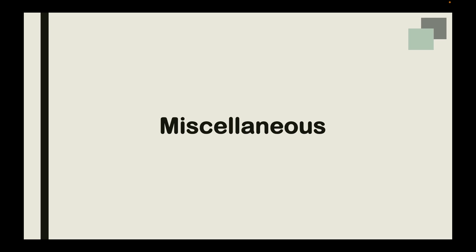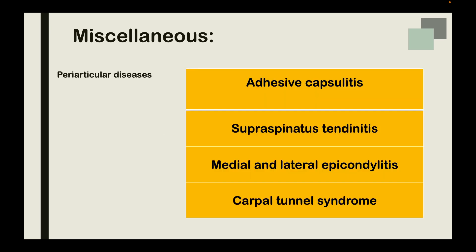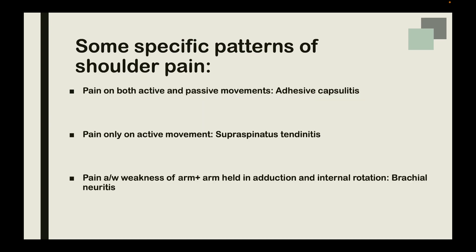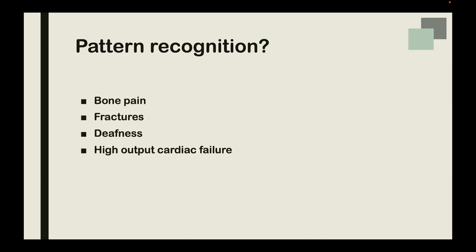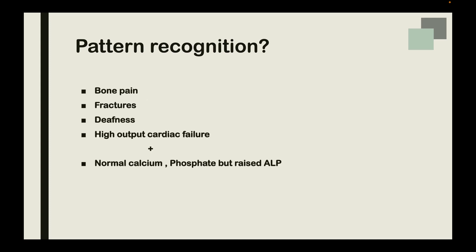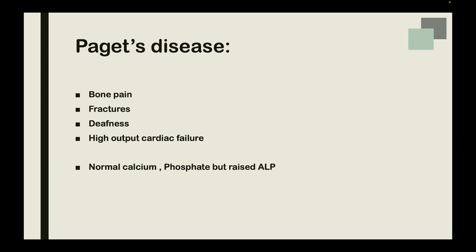Now let's focus on some miscellaneous topics. Periarticular diseases — commonly adhesive capsulitis, supraspinatus tendonitis, medial and lateral epicondylitis, and carpal tunnel syndrome. For pattern recognition in shoulder pain: pain on both active and passive movement is adhesive capsulitis; pain only on active movement is supraspinatus tendonitis; pain with weakness of the arm is brachial neuritis. Also, bone pain, fracture, deafness, and high-output cardiac failure with a normal calcium and phosphate but raised ALP should automatically trigger you to think about Paget's disease.